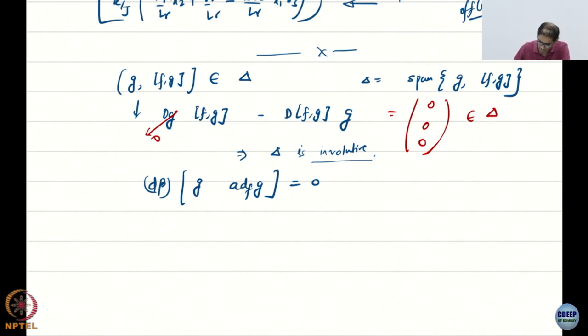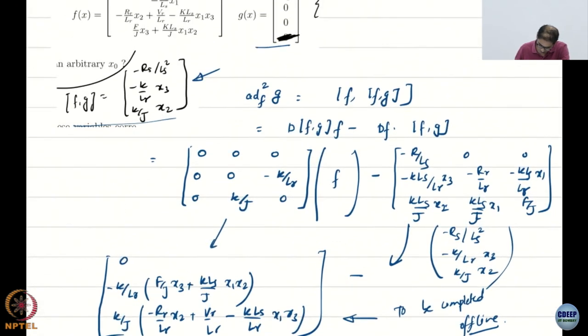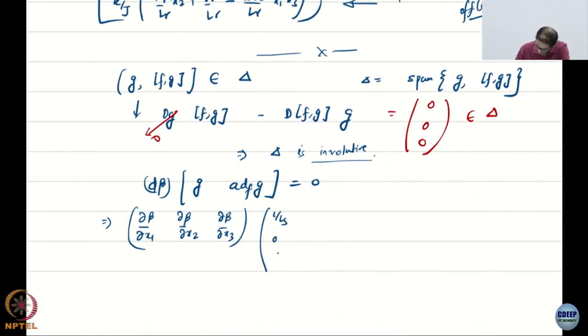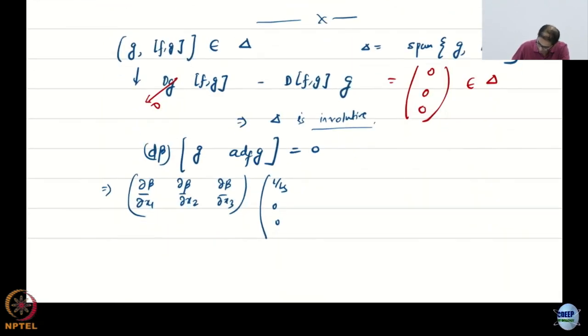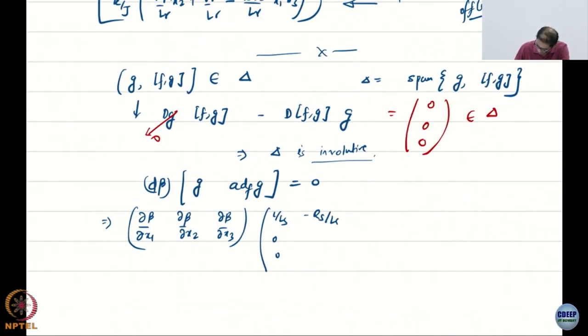This is supposed to give you a partial differential equation. So I am going to expand this. What is g? It is, I believe, some 1 over ls. And what is adf g? It is this guy. Minus ks, so klr x3 and kj x2. So this is zero.